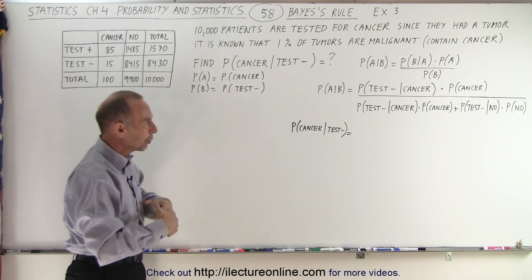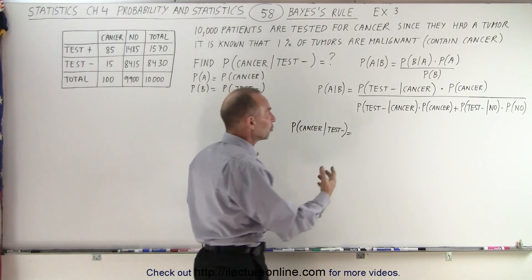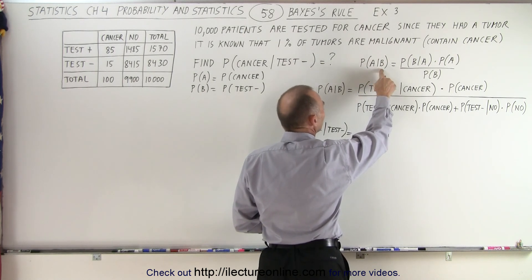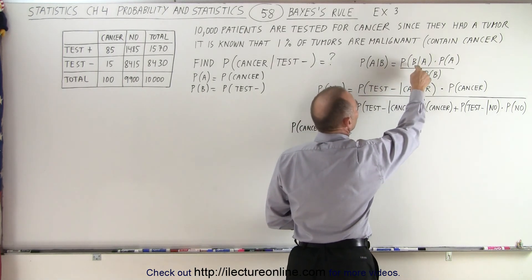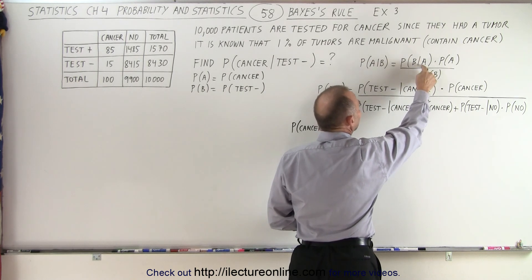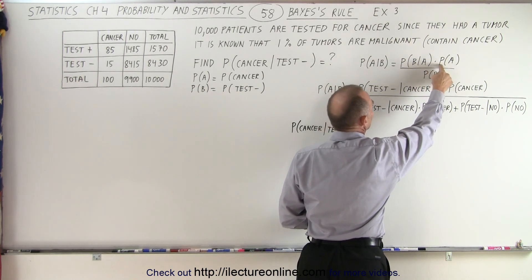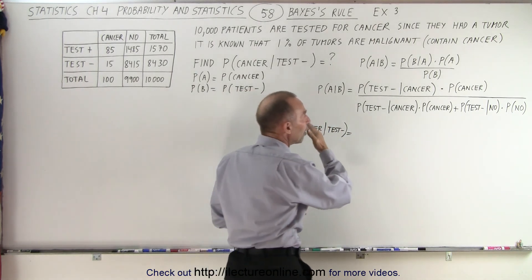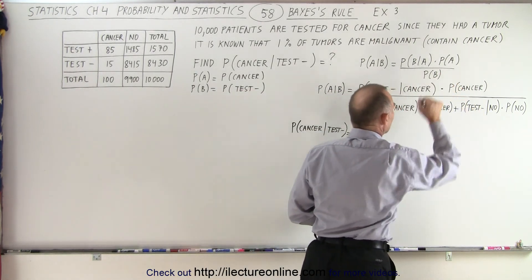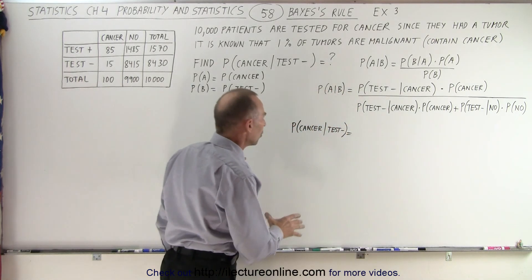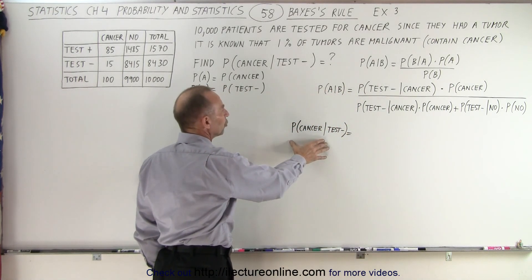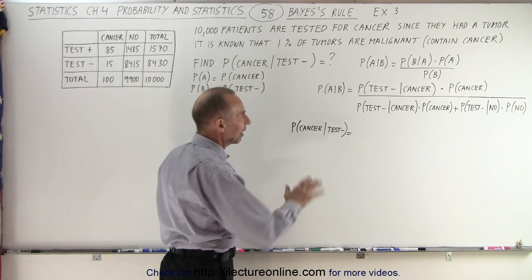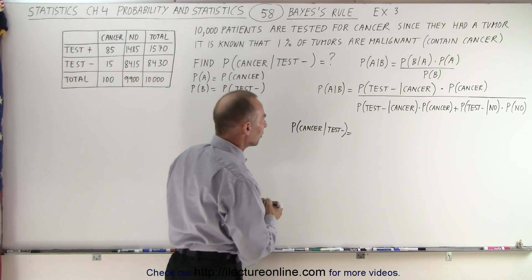That's what we're going to figure out now. We're going to use the same formula for Bayes' rule: the probability that A will occur given that B has already occurred is equal to the probability that B will occur given that A has occurred, times the probability of A, divided by the probability of B. The denominator is the sum of all the ways in which we can get the probability of B. So we're going to convert that to the probability that the patient has cancer if they tested negative, and plug in the numbers to see what we get.